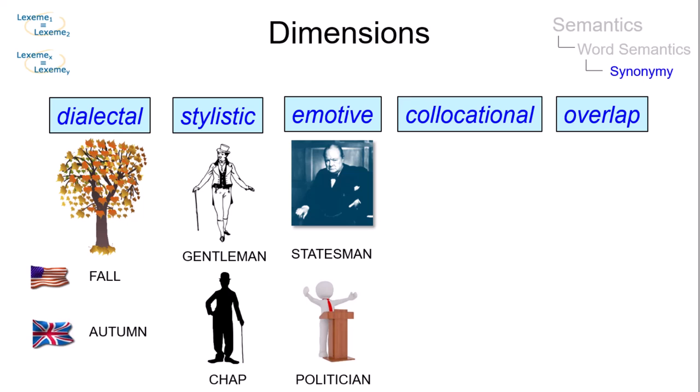And then there are lexemes that require specific contexts such as adult and rancid, which are collocationally restricted. And in some cases the meaning of two lexemes overlaps, as in mature and ripe.